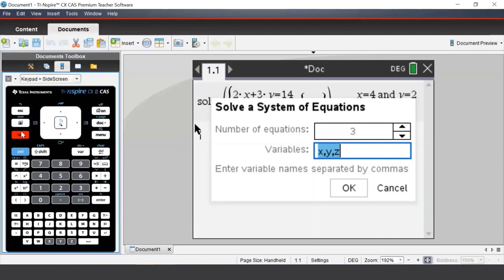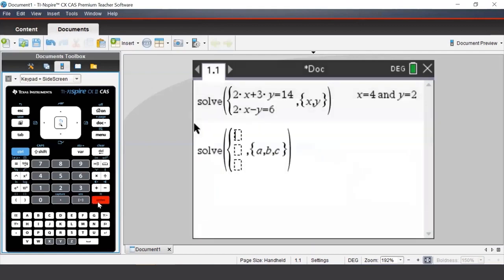Suppose instead of x, y, z we want to solve for a, b, c. We would enter in a comma, b comma, c. Again making sure that we put in a comma in between our variables and press enter.